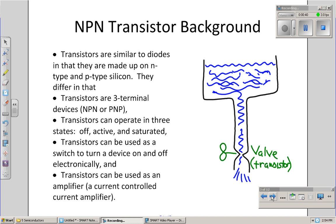Secondly, transistors can operate in three states: on, off, and saturated. Transistors can operate as a switch, they can operate on and off, and they can also be used as an amplifier.